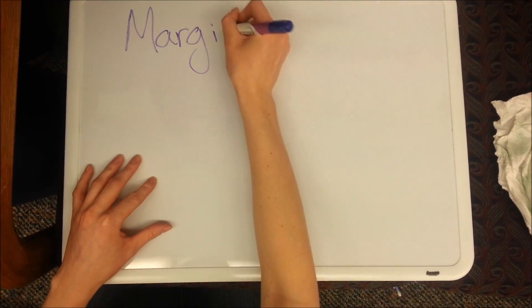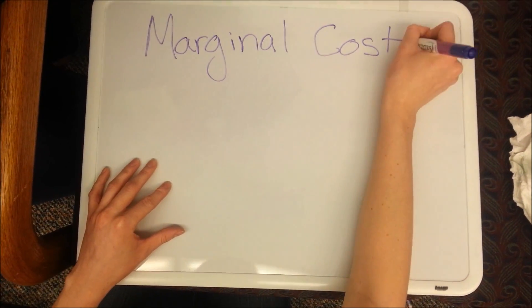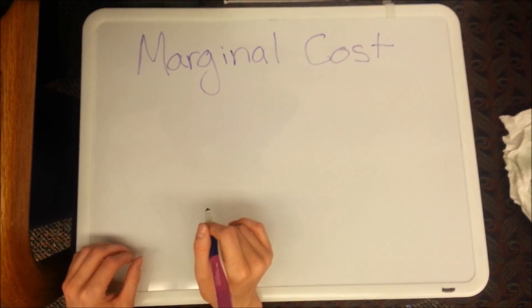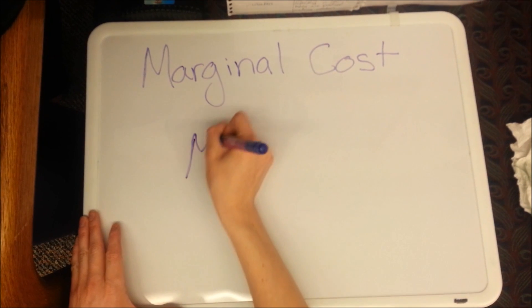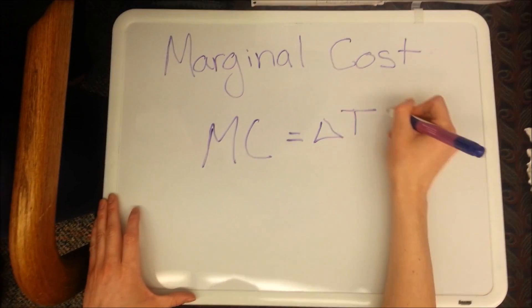Today we're going to talk about the economic principle of marginal cost. Marginal cost can be defined as the additional cost of making one more of an item and can be described using the equation MC equals change in total cost divided by change in quantity.